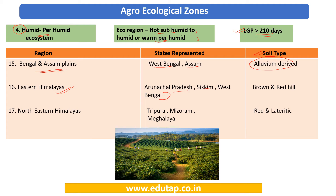Zone 16 is the Eastern Himalayas, covering Arunachal Pradesh, Sikkim, and the Darjeeling part of West Bengal. Being a hilly area, the soil here is brown and red hill soil. Zone 17 is the North-Eastern Himalayas, also known as the Purwanchal Himalayas, covering Tripura, Mizoram, and Meghalaya — the latter containing the Garo, Khasi, and Jaintia Hills, making it one of the rainiest states. The soil here is red and lateritic.